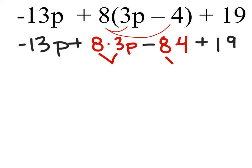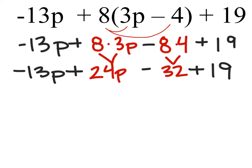So when we combine these two, 8 times 3p gives us 24p, and 8 times 4 is 32. And we just have that minus, and everything else stays the same.